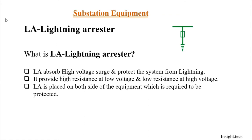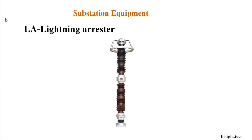The lightning arrestor does this by giving high resistance at low voltage and low resistance at high voltage. It is placed on both sides of the equipment required to be protected. On transformers it is always present, and to protect the entire substation, the LA is placed at the very beginning. Based on different voltage levels, the size of the lightning arrestor changes.